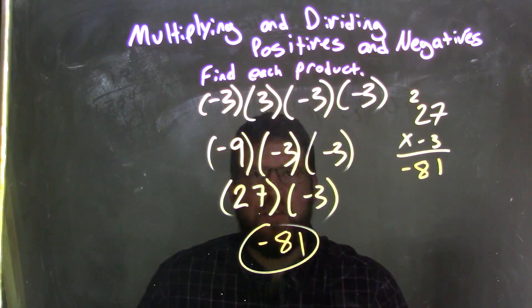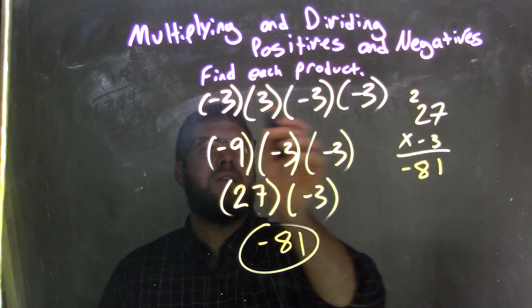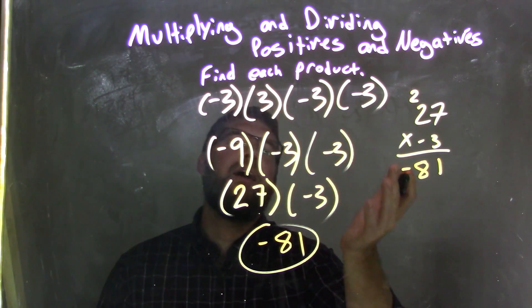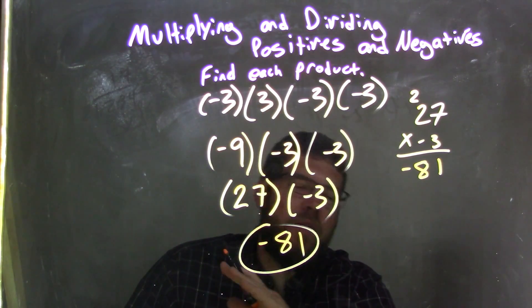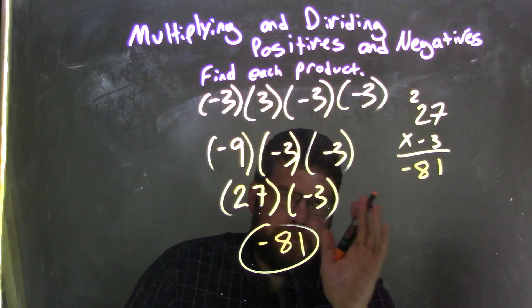Now there are other ways you could have solved this. You could have done these 3's together to get 9's, and a positive and negative 9 altogether is negative 81. But I stuck with this time with going from left to right.